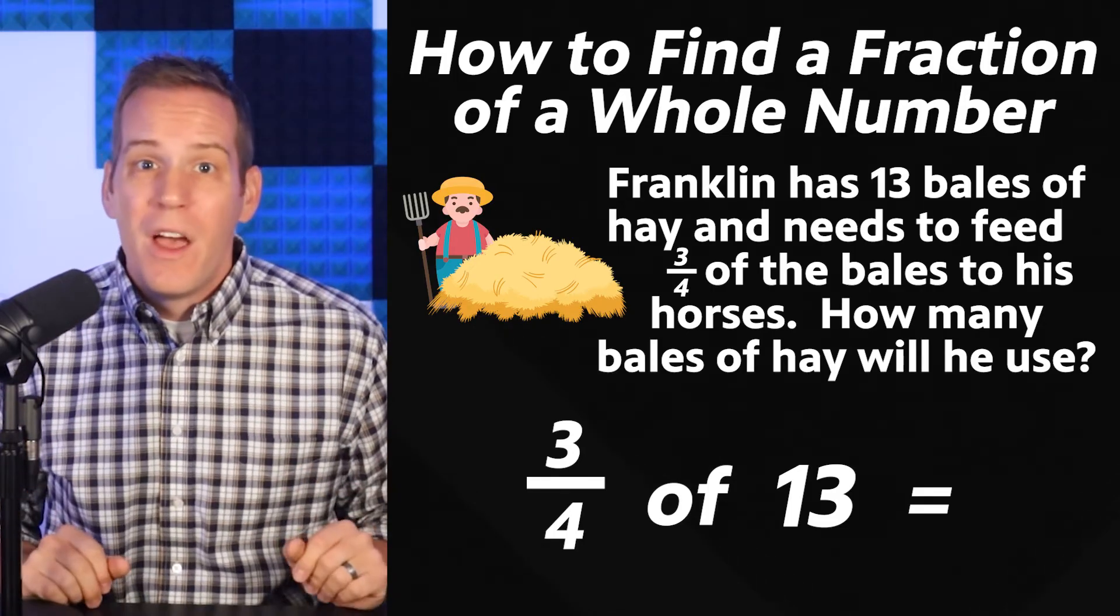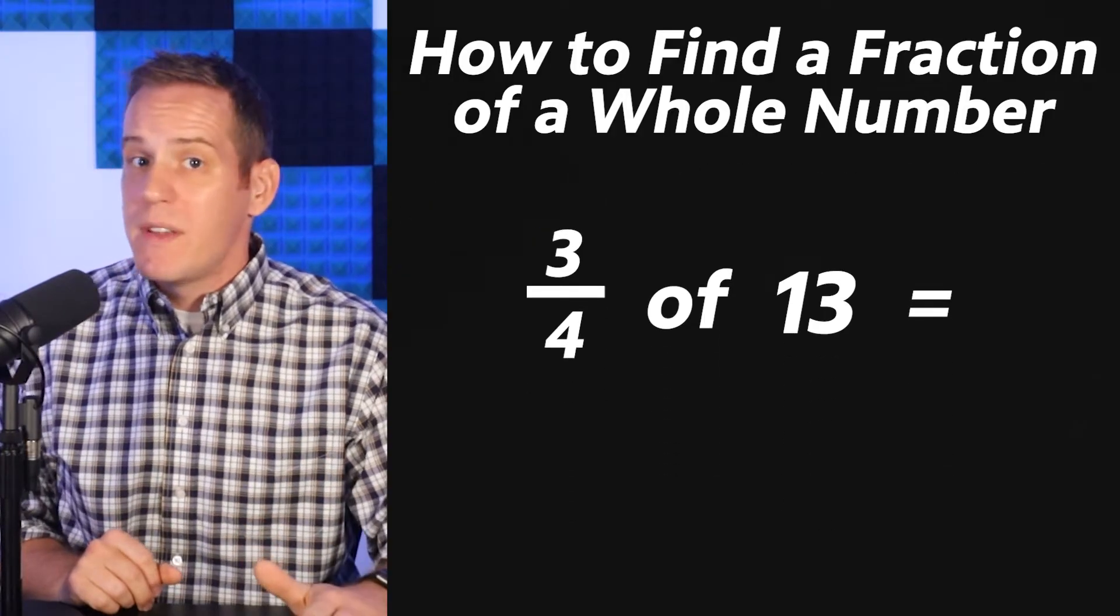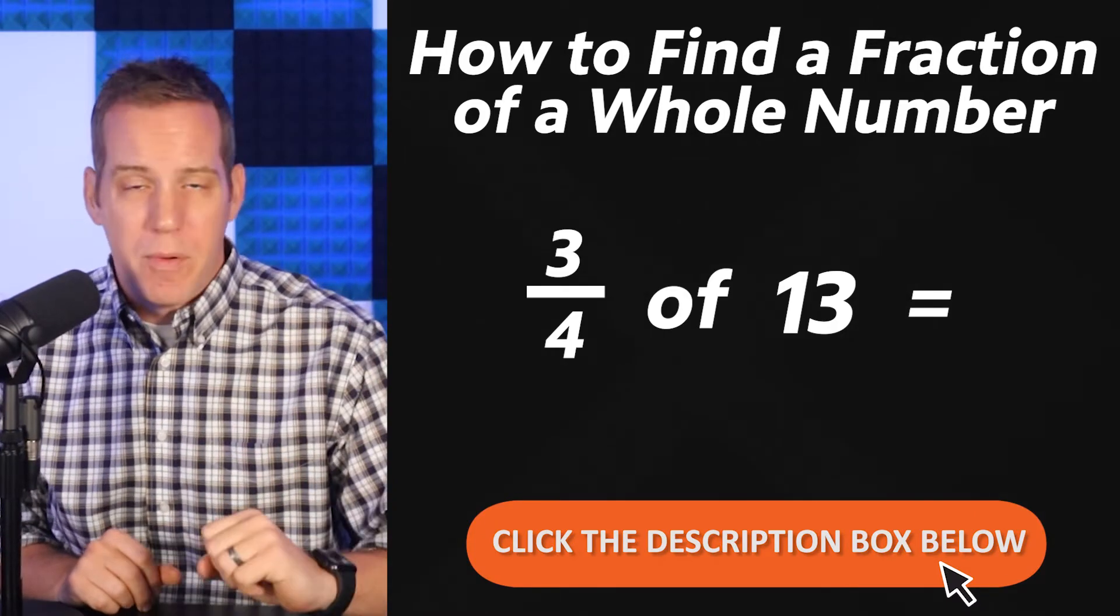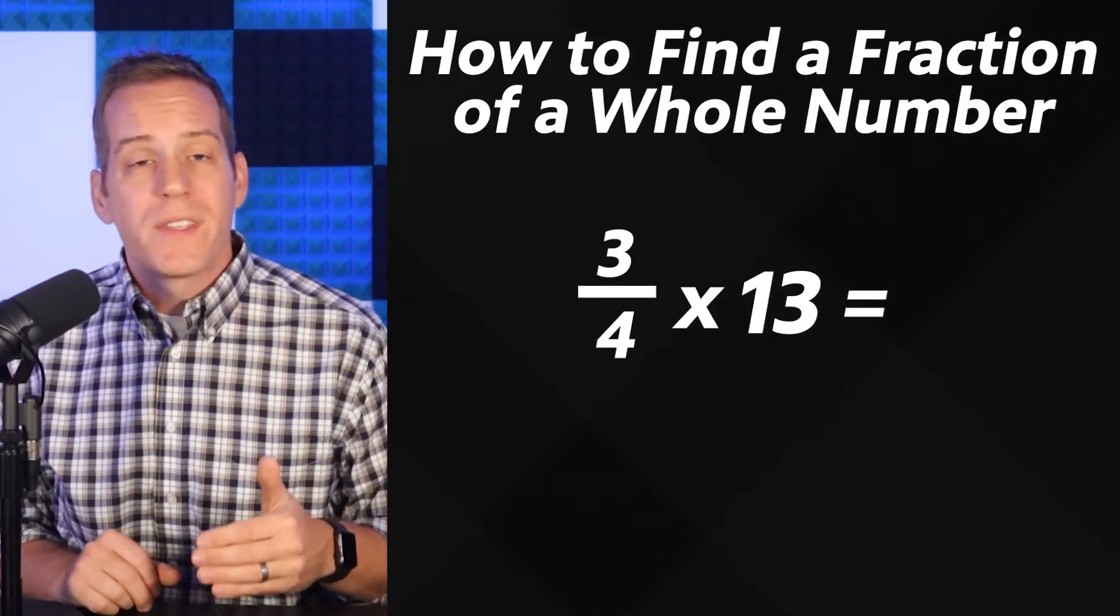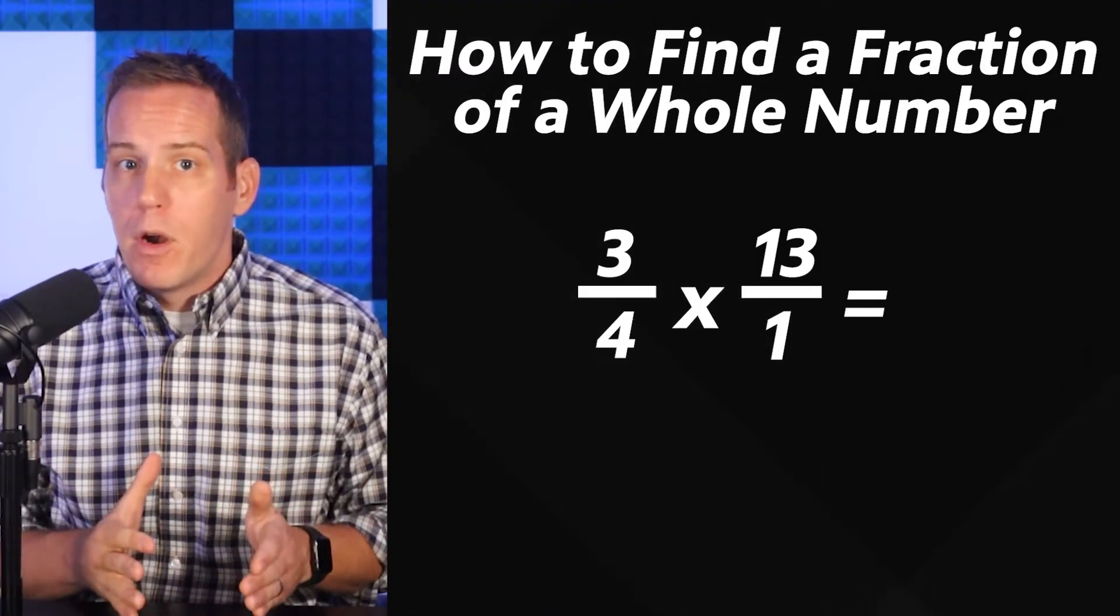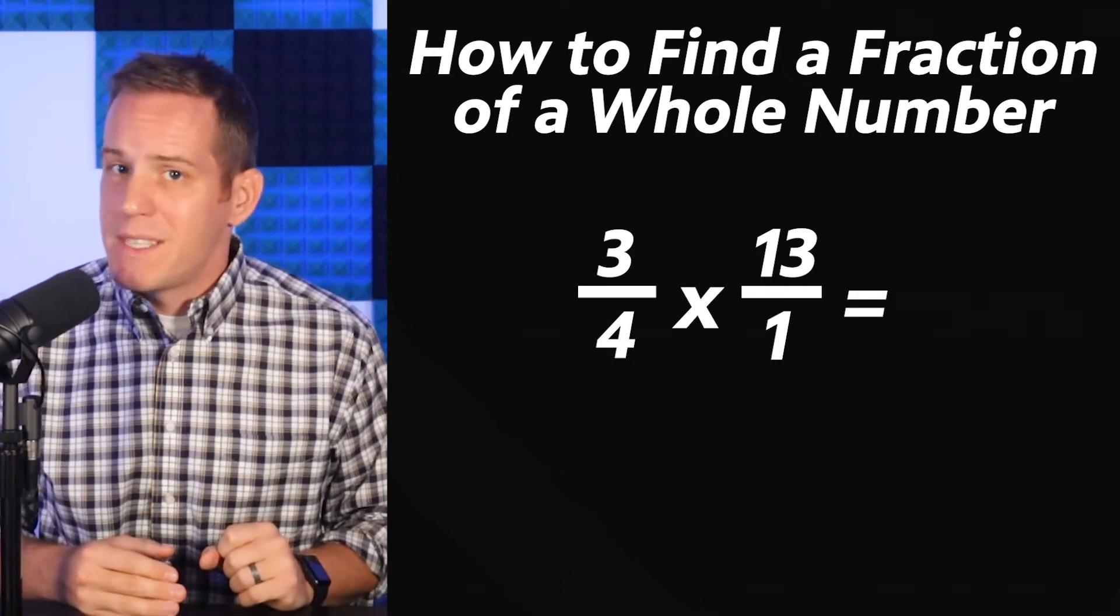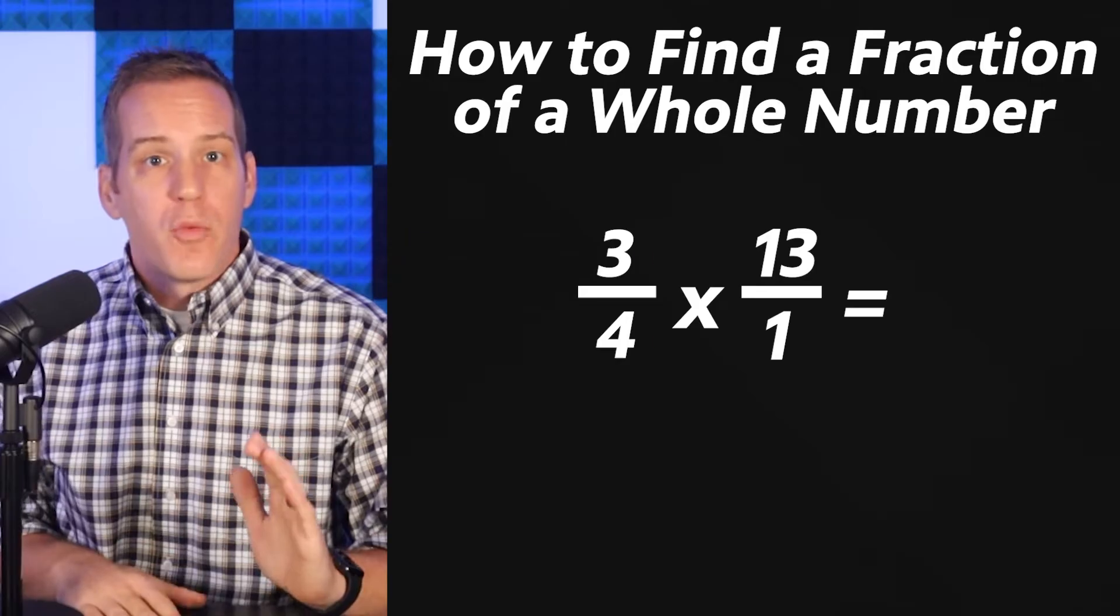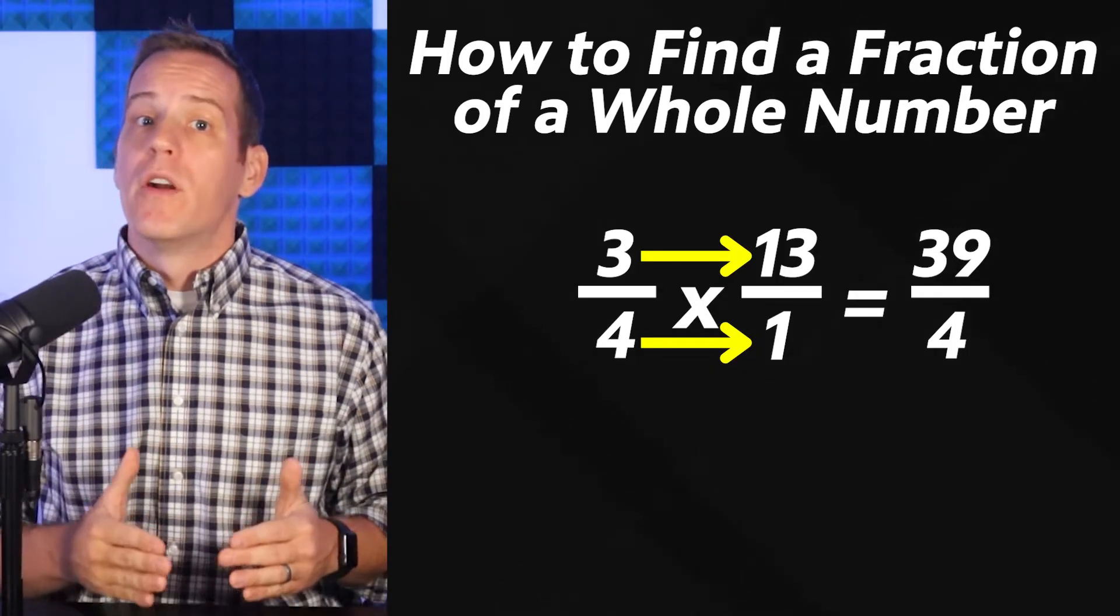When this happens don't sweat it. All you have to do is turn this problem into a fraction multiplication problem. Now we've covered this in a previous lesson so if you need more practice with multiplying fractions by whole numbers click the description box or click the link up here. 3 fourths times 13 is going to become 3 fourths times 13 over 1 because when you multiply by a whole number you always write that whole number as a fraction over 1. Now we check for cross simplifying but we can't in this problem so we're going to go right into multiplying straight across. 3 times 13 is 39 and 4 times 1 is 4. So I've got 39 over 4.